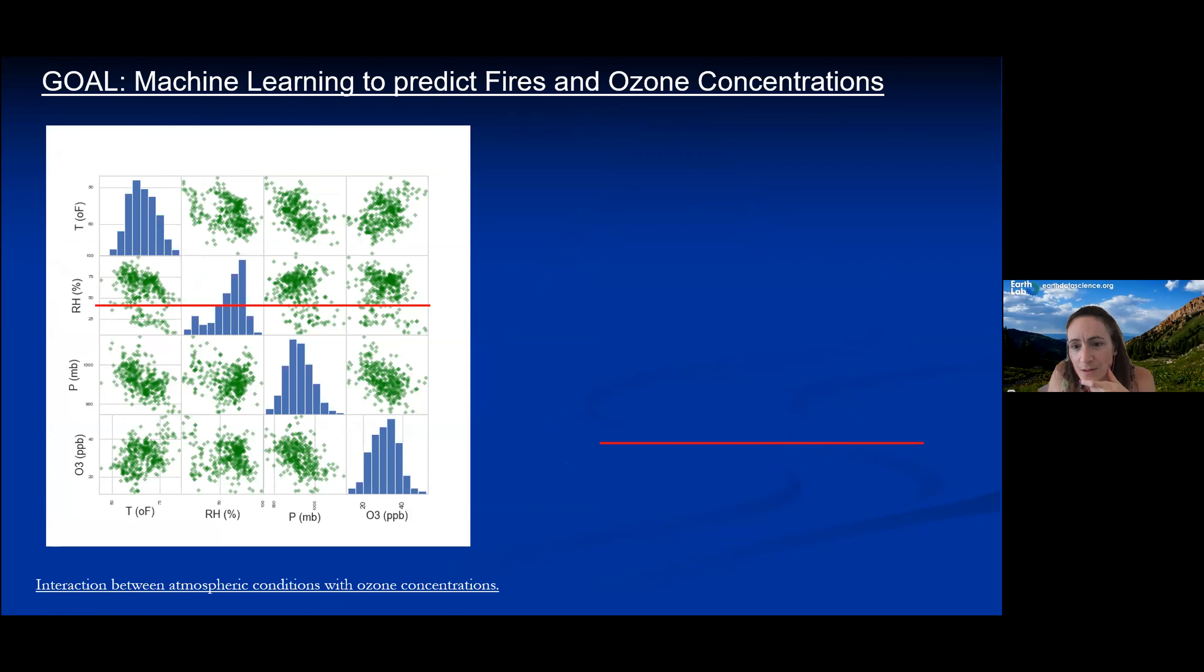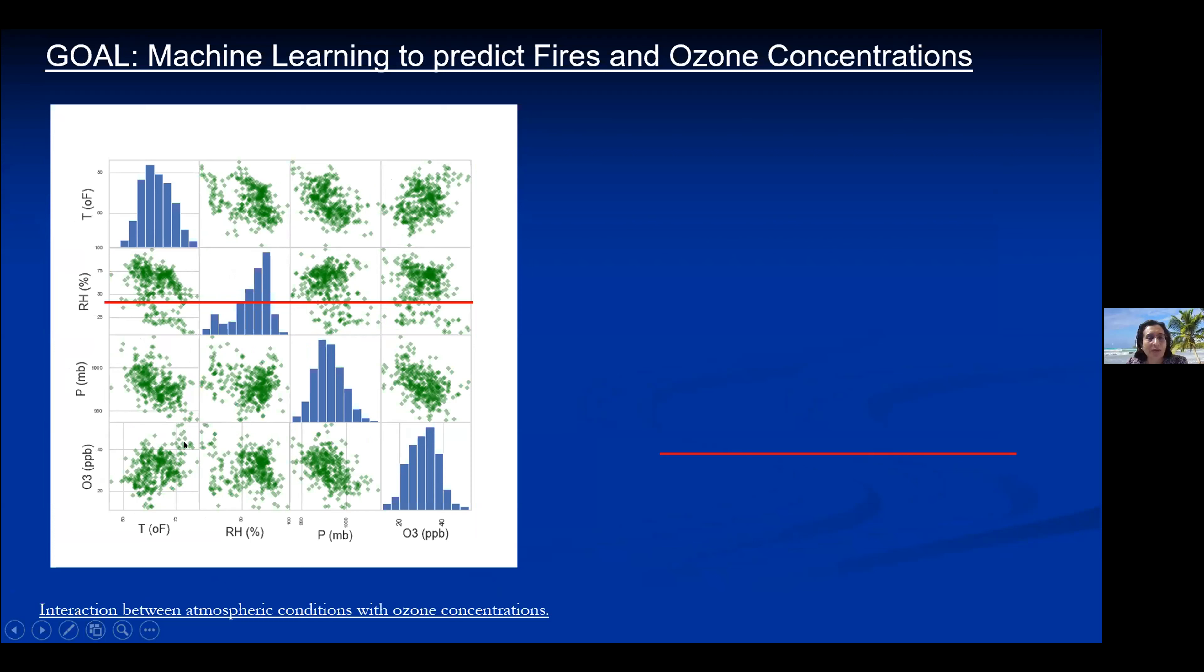And here I have plotted all for one whole year of data for 2014 and it's a correlation matrix. And as you can see when we plot temperature, relative humidity, pressure and ozone there doesn't seem to be really specific correlation except with the pressure and a little bit with the temperature.